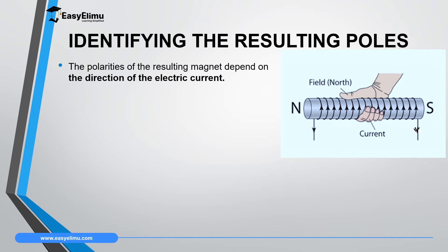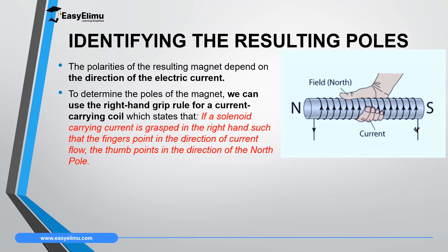The polarity of the resulting magnet depends on the direction of current in the solenoid. There are two ways to identify the north and south poles. The first is Fleming's right-hand grip rule for a solenoid, which states: if a current-carrying solenoid is grasped with the right hand with the fingers pointing in the direction of current, then the thumb will point to the north pole. As shown on screen, the fingers point in the direction of current flow and the thumb points to the north pole.